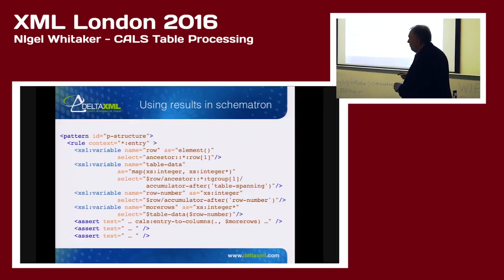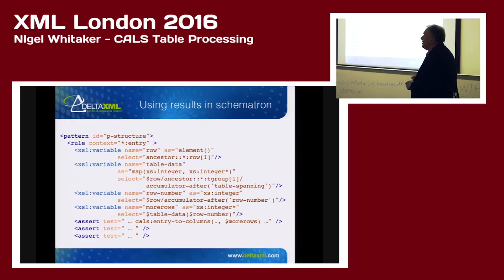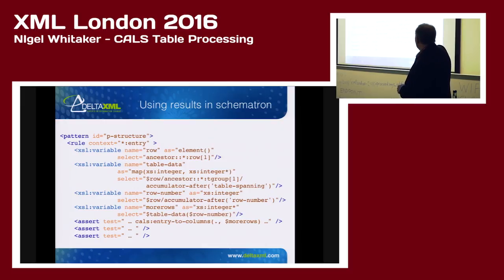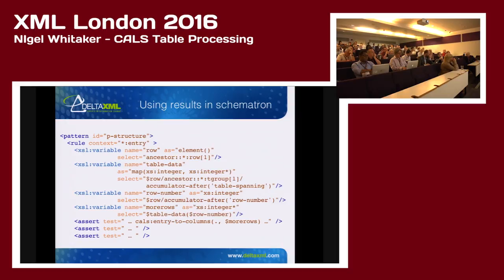We put that iterator into a function and we use that function in an accumulator. So we calculate that grid for each table in a document and then we can refer to it. And this is coming into the Schematron world. Schematron has let, but I prefer to use xsl:variable because I can declare the types. We declare the types, we look up our accumulators, and we can get, for example, a more-rows variable. We can use that in our assertions. The structure of Schematron with its pattern rule-based structure means that we only need to calculate these variables once and can apply them in a number of different assertions. That's a nice benefit.